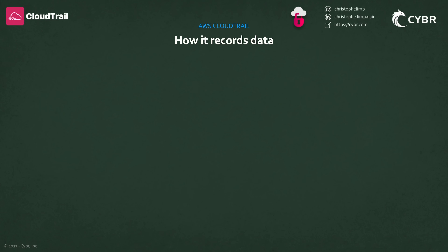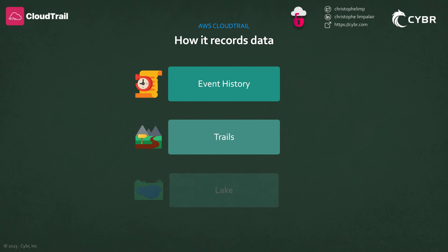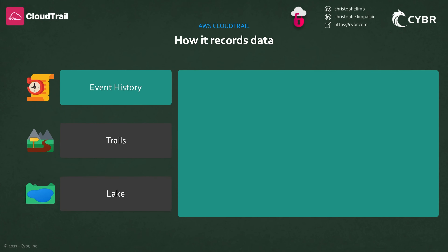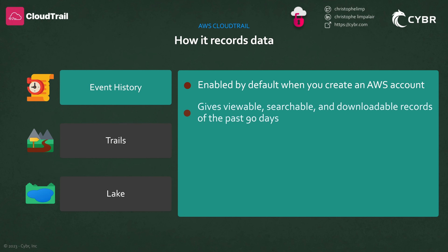We've just learned about how CloudTrail can log different types of data. Now let's talk about the three ways that it has to record this data. The first way is event history, the second is trails, and the third is CloudTrail Lake. The event history in CloudTrail is enabled by default whenever you create an AWS account, and it gives you viewable, searchable, and downloadable records of the past 90 days for management events in an AWS region.